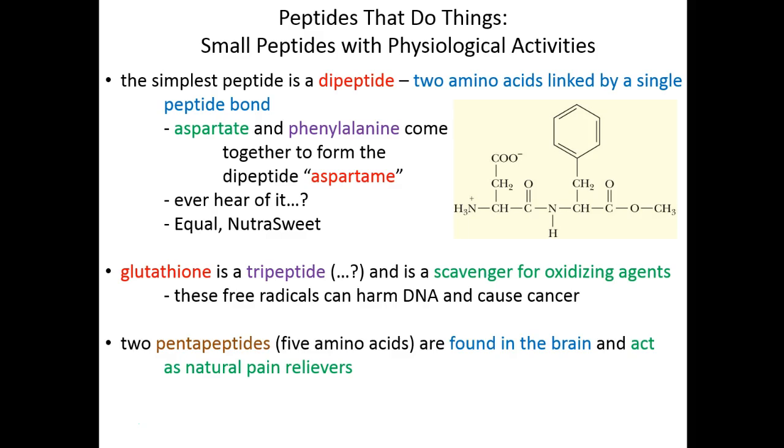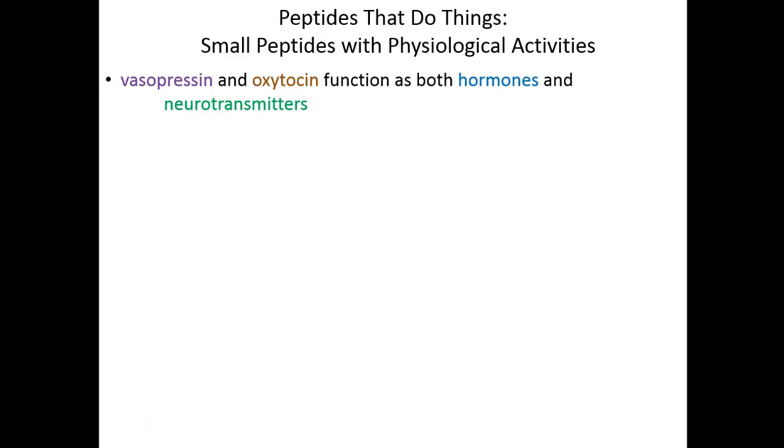Two pentapeptides—two separate peptides of five amino acids each—are found in the brain and act as natural pain relievers. Their structures are mimicked by opiate drugs, including morphine. Morphine looks like these pentapeptides and fools the brain into thinking pain is being naturally relieved.